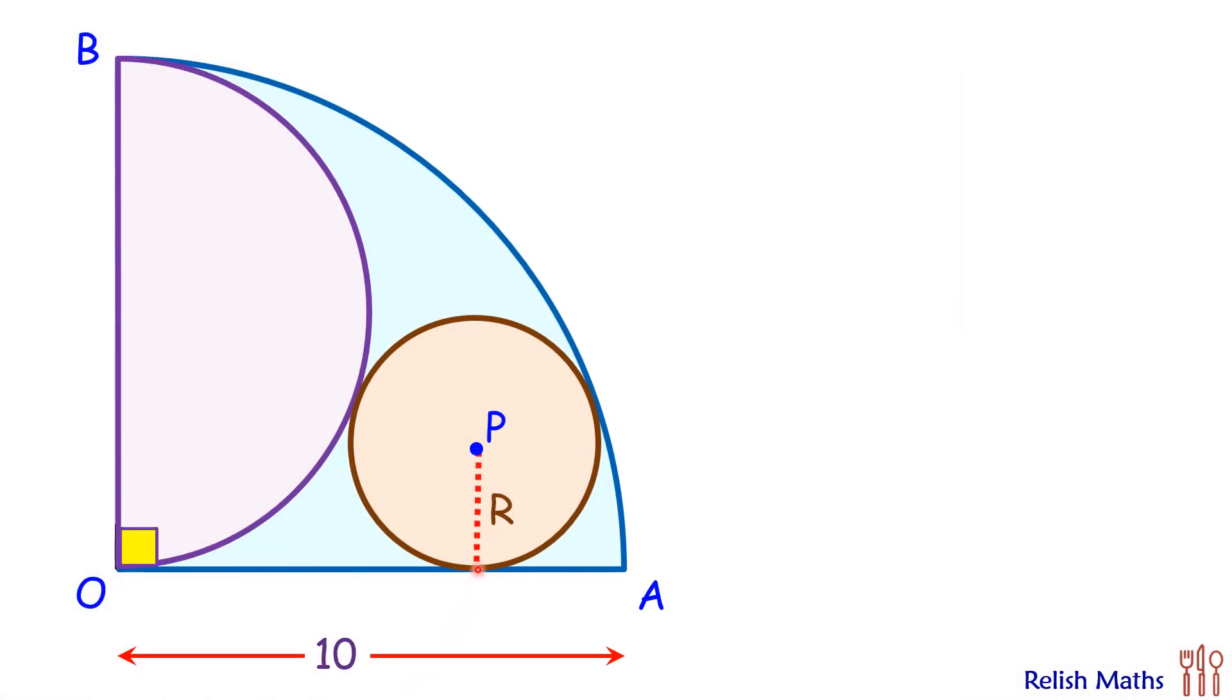Let's name this point as C. We know that the radius is perpendicular to the tangent, so this angle is 90 degrees. Now, this blue quadrant and the circle are touching each other, thus the centers and the point of contact are in a straight line, so let's join them.